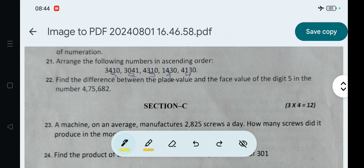Next question 21. Question is: Arrange the following numbers in ascending order. These numbers we have to arrange in ascending order. Ascending means smallest to greatest, and descending means greatest to smallest. Ascending - we'll arrange from smallest to largest.